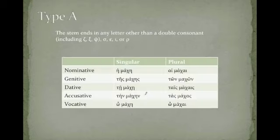So, as review, we had type A of the feminine nouns, like hē machē, nouns that ended in the eta. Hē machē, tēs machēs, tē machē, tēn machēn. Hai machai...